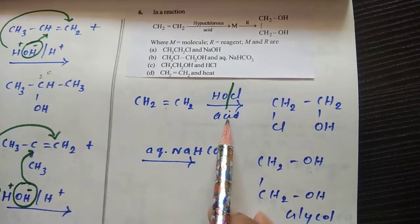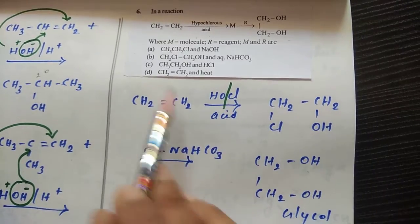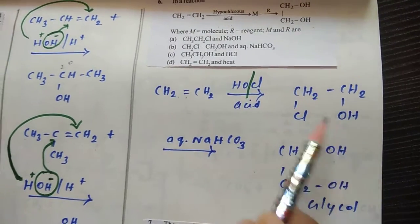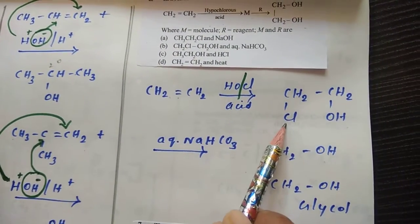So first, hypochlorous acid undergoes addition reaction. Chlorine and OH are cleaved like this. One hydroxy group is attached here, Cl group is attached here. If this is M, then you just find out what M is.